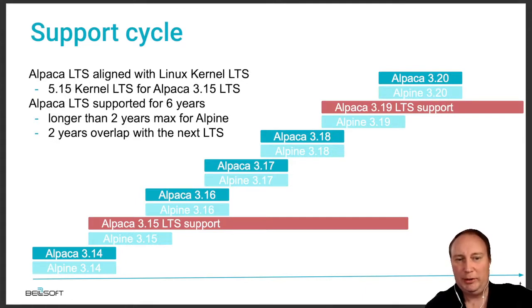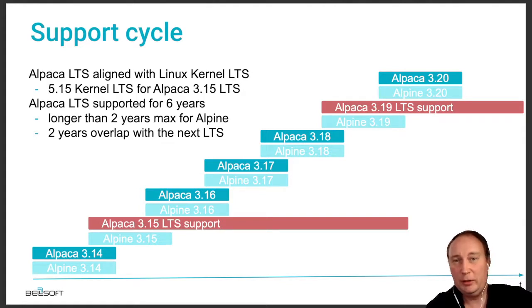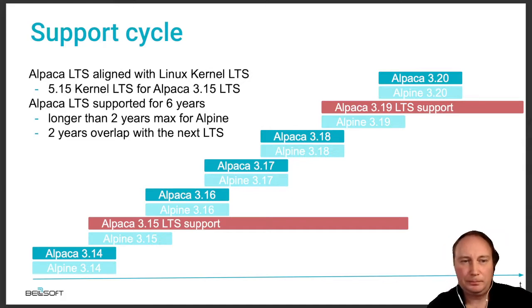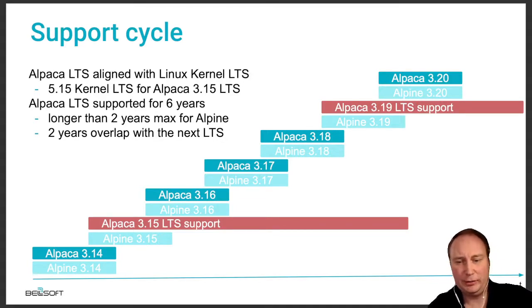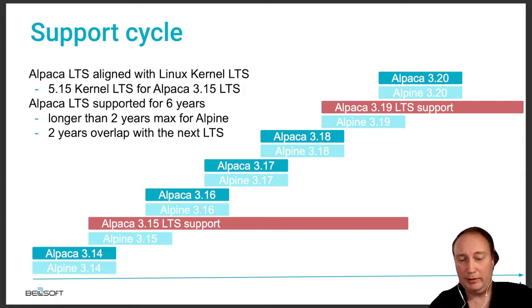The release plan includes long-term supported releases with overlapping LTS windows — two years of overlap and six years of support. We also use recent LTS kernels for Alpaca, which you'd use for bare metal or virtual machine installations.